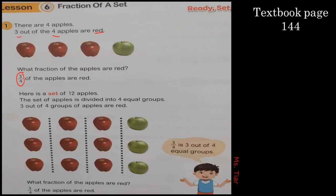Now, how do we expand this fraction? We put this fraction into groups — we put the three into three groups. So we have a set of 12 apples: three groups of red apples and one group of green apples. Even though we expand the fraction, the value stays the same. We expanded three out of four into three groups out of four groups. Do you understand?